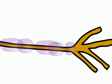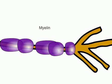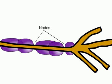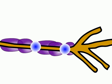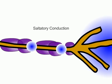Fatty insulation, called myelin, covers the entire axon, except at certain spaces called nodes. Action potentials can jump very fast from node to node, a process called saltatory conduction.